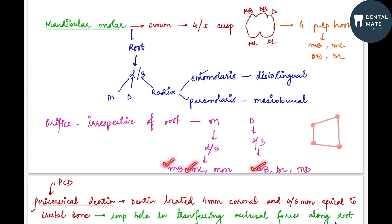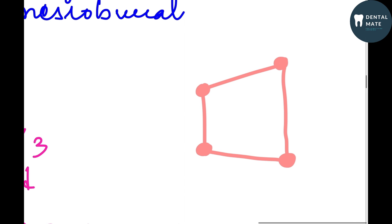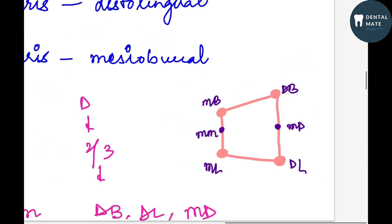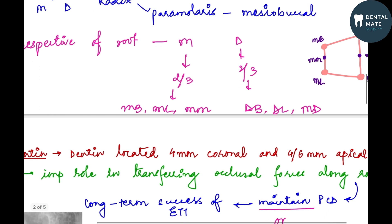Irrespective of the root, at the orifice level on the mesial or distal side, we can see two or three orifices — mesiobuccal, distobuccal, mesiolingual, distolingual, and mid-mesial or mid-distal orifice. If this is the rhomboidal shape opening of the mandibular molar, on the mesial side there could be mesiobuccal, mesiolingual, distobuccal, and distolingual orifices, along with extra mid-distal or mid-mesial orifices.